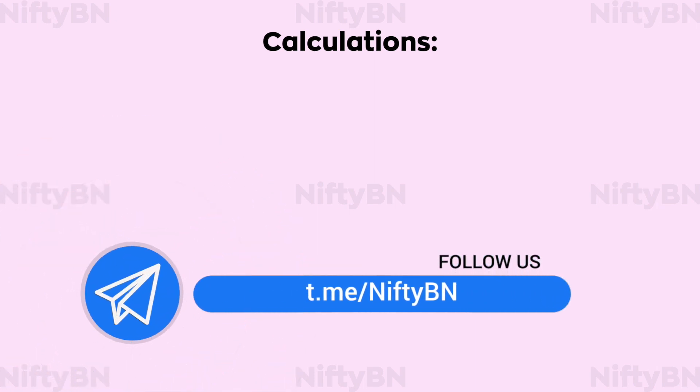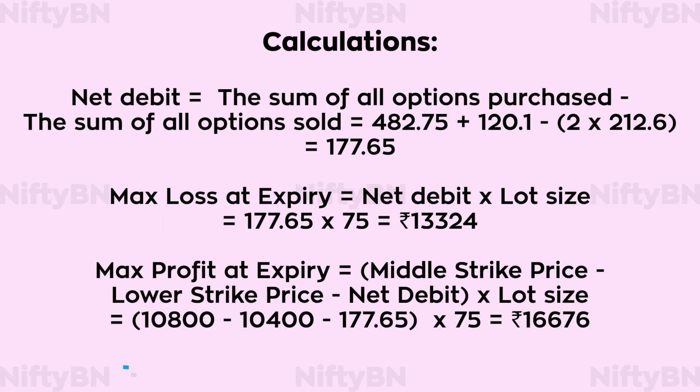Now let us look at some calculations. Net debit is equal to the sum of all options purchased minus the sum of all options sold, which comes to about Rs 177.65. Max loss at expiry is equal to net debit multiplied by the lot size, which comes to about Rs 13,324. Maximum profit at expiry is equal to middle strike price minus lower strike price minus net debit, multiplied by lot size, which comes to about Rs 16,676.